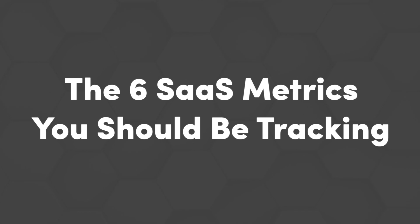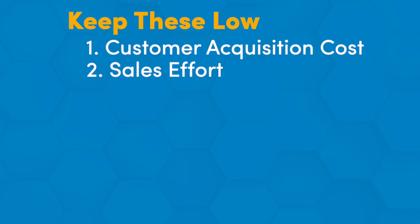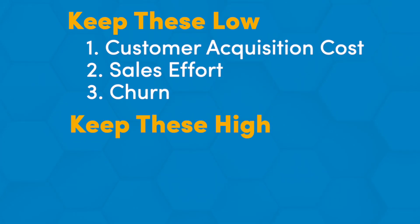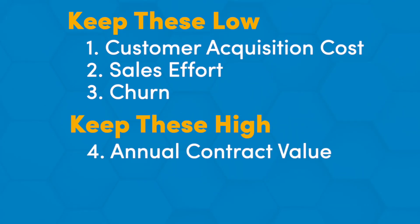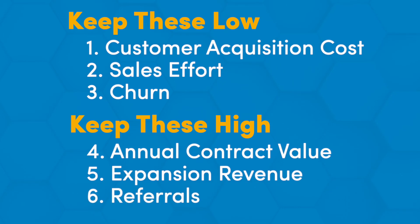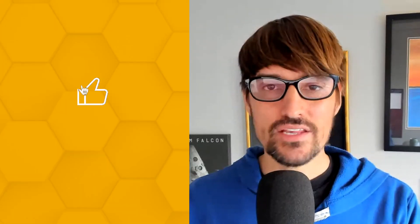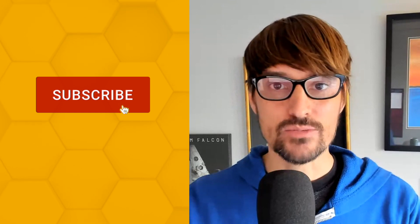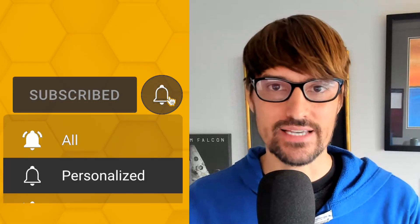So the six SaaS KPIs you should be tracking: the three low are cost to acquire customer, sales effort, and churn; and the three high are annual contract value, expansion revenue, and referrals. Thanks so much for joining me today. If you enjoyed this video, hit the like button and subscribe to the channel. We have a couple of additional videos you can click on to dig in further to SaaS metrics and go deeper on this topic.